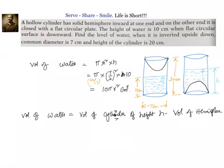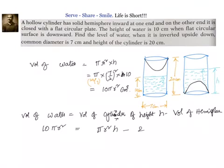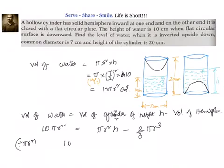Volume of water is 10πr². So, 10πr² equals the volume of the cylinder of height h — that is πr²h — minus the volume of the hemisphere, which is (2/3)πr³. Now, I have not substituted values for π and r² because I can divide both sides by πr². I will get: 10 = h − (2/3)r, or h = 10 + (2/3)r.